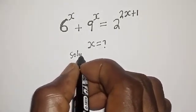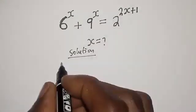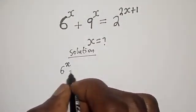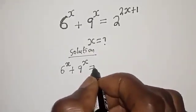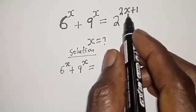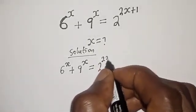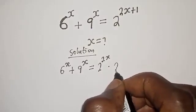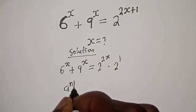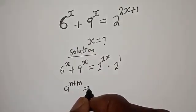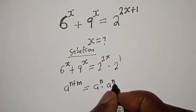Solution. Here, 6 raised to power s plus 9 raised to power s is equal to 2 raised to power 2s plus 1. This can be written as 2 raised to power 2s multiplied by 2 raised to power 1, using the rule that a raised to power n plus m equals a raised to power n multiplied by a raised to power m.